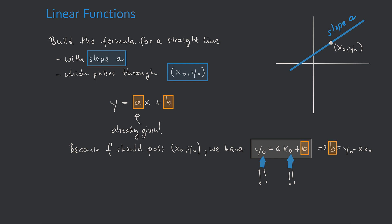So now we can take that value for b and plug it into our equation. Bringing it all together, we get the following equation: y equals ax plus y0 minus ax0. That is the formula for b. If we now simplify a little, we get a times x minus x0 plus y0.